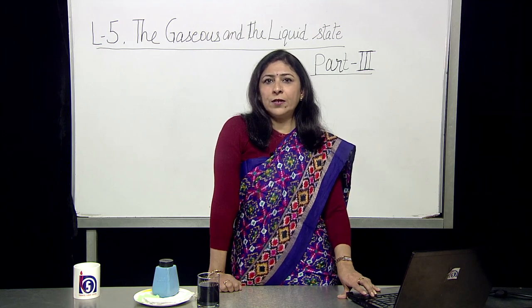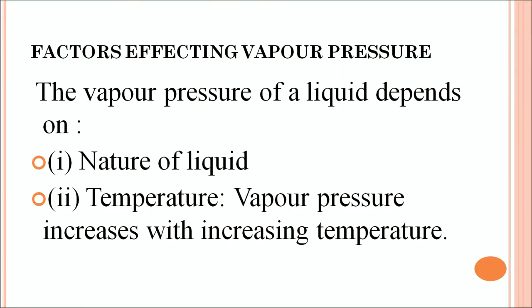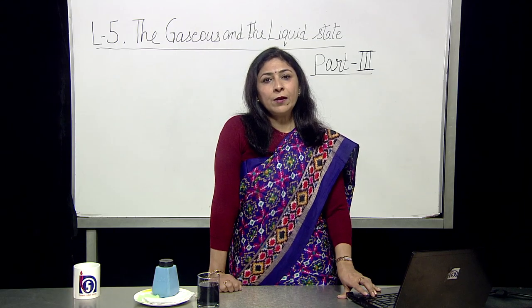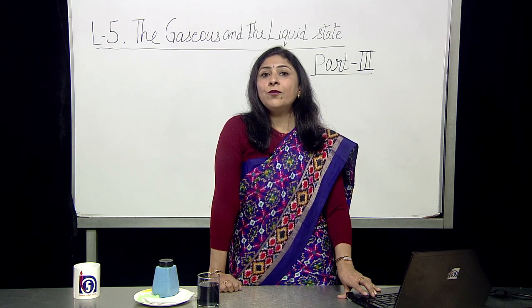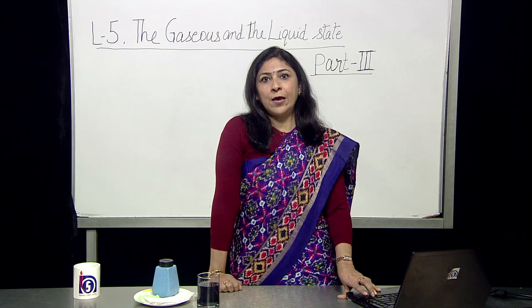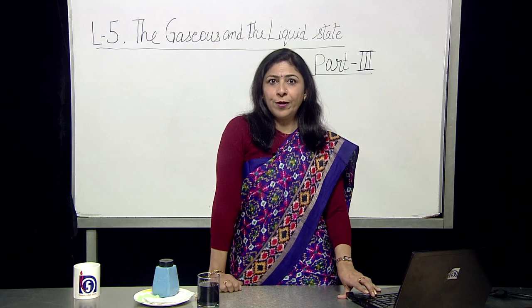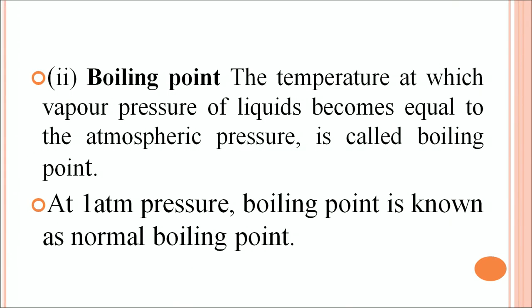What factors affect vapor pressure? The vapor pressure of a liquid depends on the nature of the liquid and on temperature. Vapor pressure increases with increasing temperature. When we increase temperature, kinetic energy is more, the velocity of the molecules is faster and they escape out. So vapor pressure is directly proportional to temperature. This brings us to the term boiling point: the temperature at which the vapor pressure of the liquid becomes equal to the atmospheric pressure is called the boiling point.